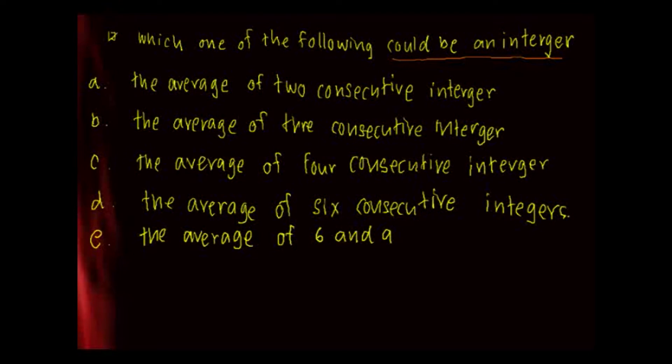You can pick any number that's going to be easy for you to calculate. You can pick from 1, 2, 3, 4, 5, 6, whatever. But let's plug in option A. Two consecutive integers, you can pick any number. 1 plus 2 divided by 2, right?